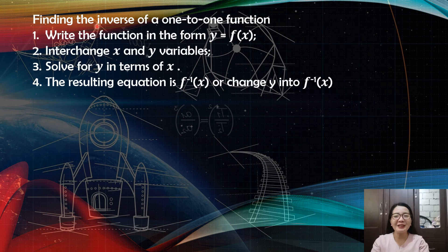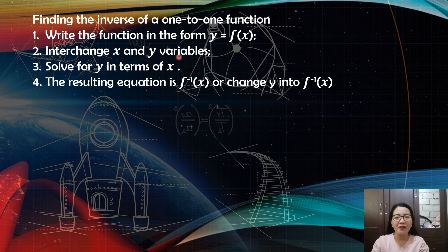There are steps in finding the inverse of a one-to-one function. First, write the function in the form y equals f of x. Number two, interchange x and y variables. Number three, solve for y in terms of x. And the last step, the resulting equation is the inverse of x — change y into the inverse notation.